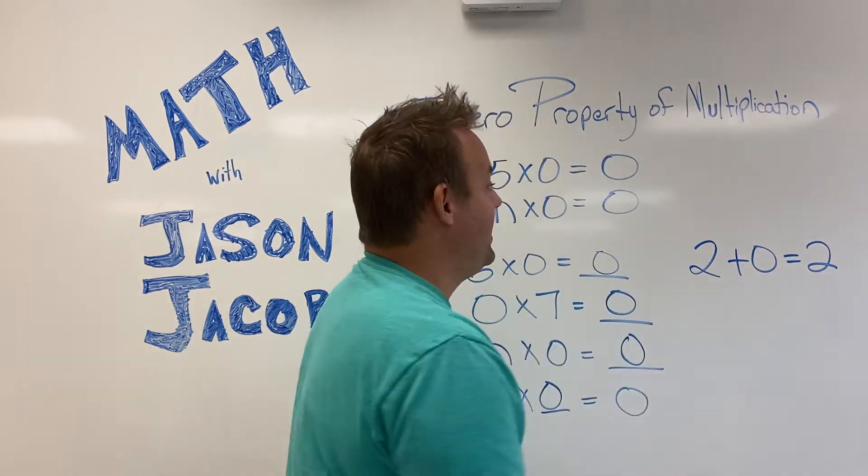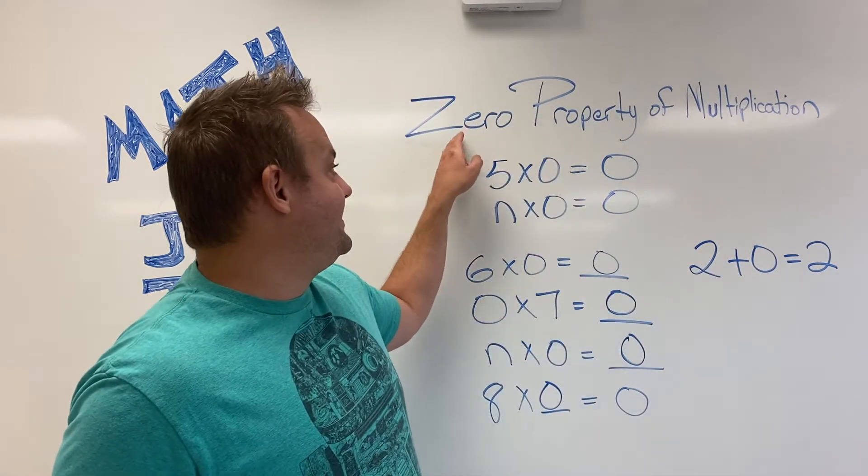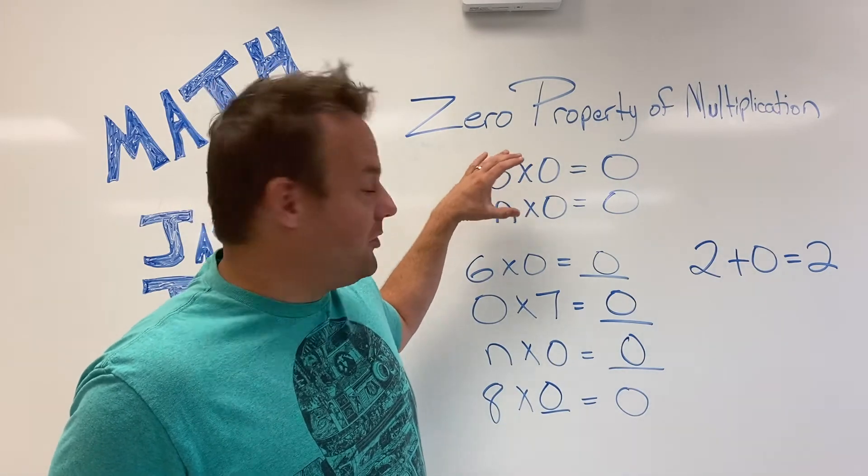That's the identity property of addition, but this is the zero property of multiplication.